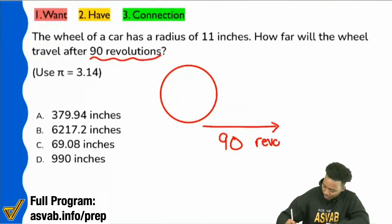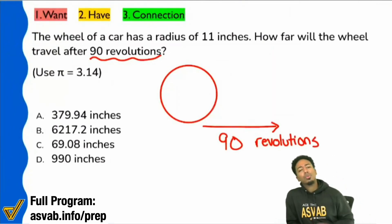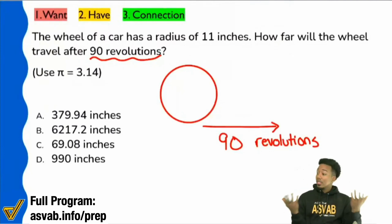Revolutions? Everyone, is it fair to say that we're looking for distance after 90 of those supposed revolutions? I don't know what revolutions means yet. We'll talk about that. But is it safe to say that we're looking for distance? That the wheel travels? Okay, cool. Again, this is the first step we need to take, guys.